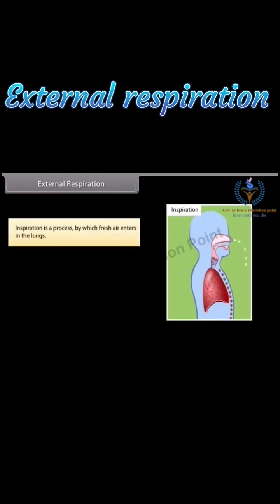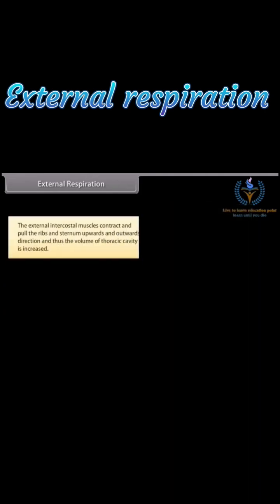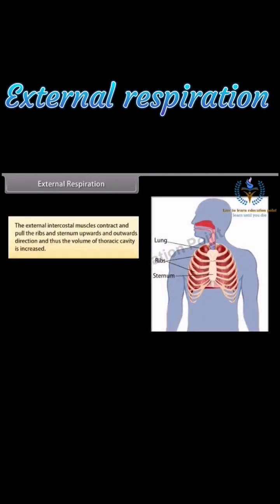Inspiration is a process by which fresh air enters the lungs. The diaphragm becomes flat and gets lowered by the contraction of its muscle fibers, increasing the volume of the thoracic cavity. The external intercostal muscles contract and pull the ribs and sternum upwards and outwards, thus further increasing the volume of the thoracic cavity.